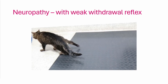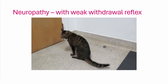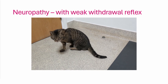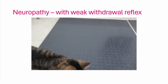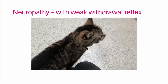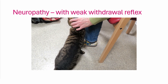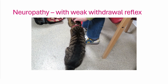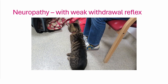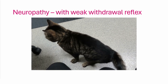Here we have a cat with a neuropathy that has a very weak withdrawal reflex. This is a very anxious cat in the consulting room, and the more handling you did, the more difficult it was to handle him. He was much more relaxed if you just let him be on the floor, and you could gain far more information about him that way.